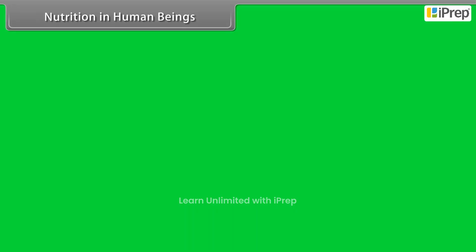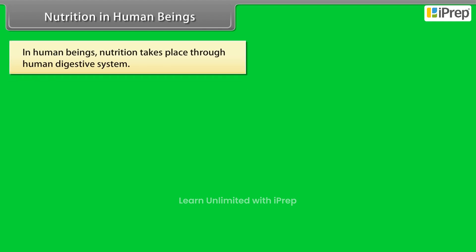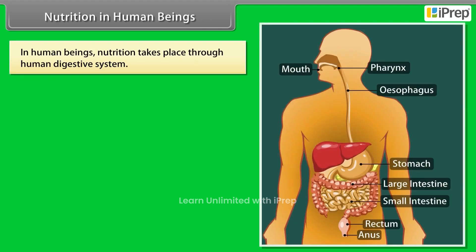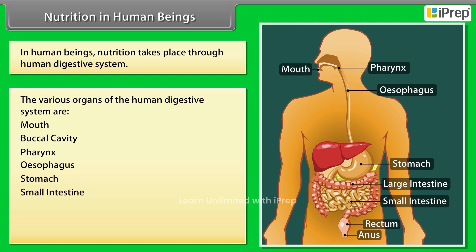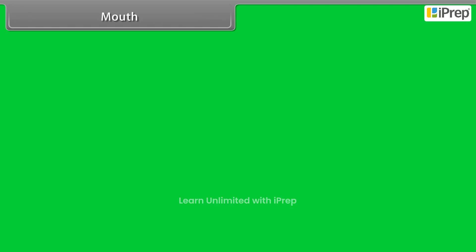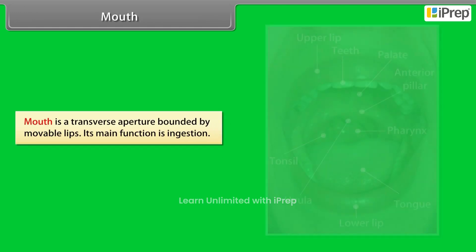Nutrition in human beings takes place through the human digestive system. The various organs of the human digestive system are: mouth, buccal cavity, pharynx, esophagus, stomach, small intestine, large intestine, rectum, and anus.